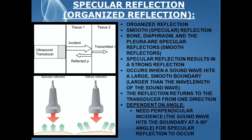Specular reflection is an organized type of reflection, also called a smooth reflection. Bone, diaphragm, and the pleura are specular reflectors — reflectors with a smooth surface. Specular reflection results in a strong reflection, and it occurs when a sound wave hits a large, smooth boundary that must be larger than the wavelength of the sound wave. The reflection returns to the transducer from only one direction. Note that specular reflection is dependent upon angle — you need perpendicular incidence, meaning the sound wave hits the boundary at a 90 degree angle. The main points are: organized reflection, large smooth boundary, and perpendicular incidence must be present.